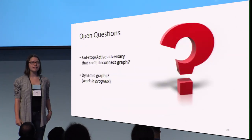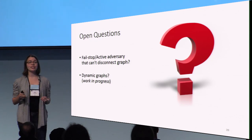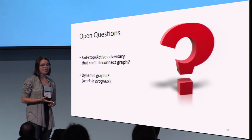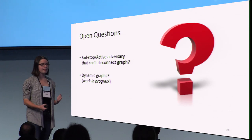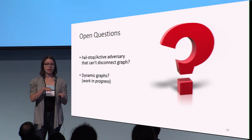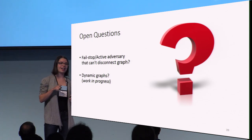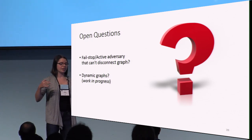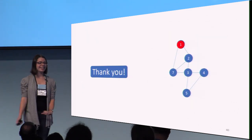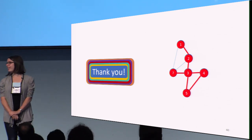To conclude with a couple of open questions: it is impossible to get topology-hiding computation if the adversary can disconnect the graph, but what if we don't allow the adversary to disconnect the graph but still let him deviate from the protocol in some way? There's also the question of dynamic graphs — in the example of cars on a highway communicating locally, you always have cars entering and leaving, so the graph is changing but not adversarially. And finally, here is a slide reviewing the algorithm. I think I've got some questions. Thank you.